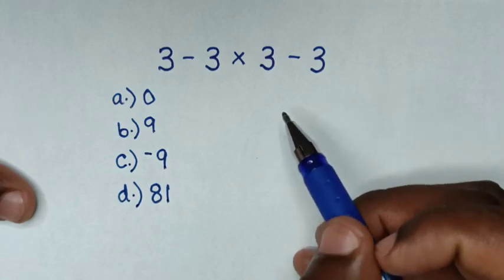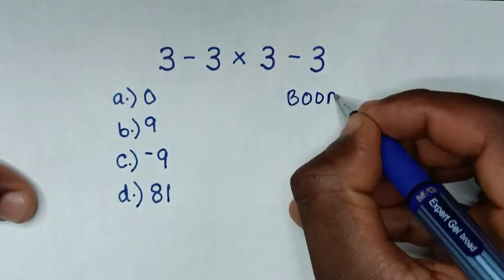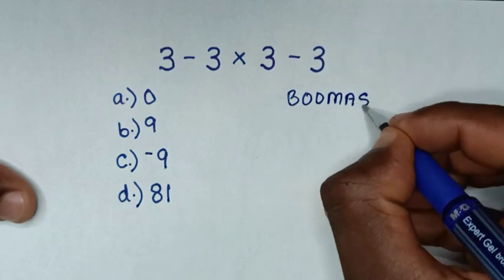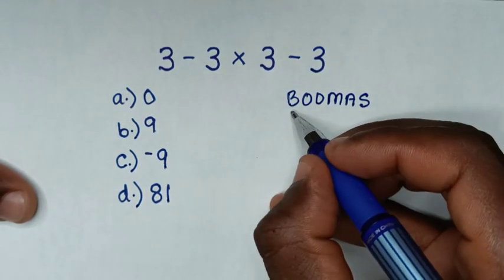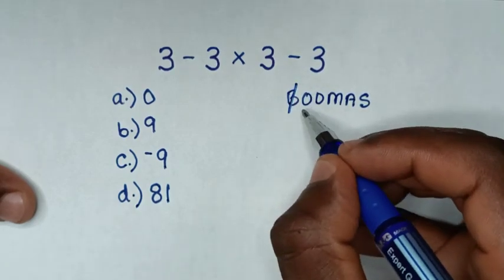Let's solve this using the BODMAS rule. B is for brackets—we don't have brackets in this problem. O is for order or exponents—we don't have those either.